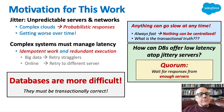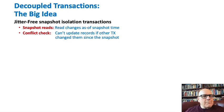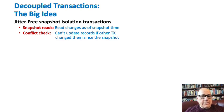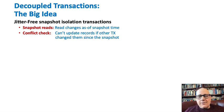How can databases offer low latency on top of jittery servers? The answer comes from Quorum — you wait for responses from enough servers. We want to do jitter-free snapshot isolation transactions. There are two parts to snapshot isolation: snapshot reads, meaning you're reading changes as of a particular time of commitment, and conflict checking, which says you cannot update records if another transaction has changed them since the snapshot time used by this transaction.